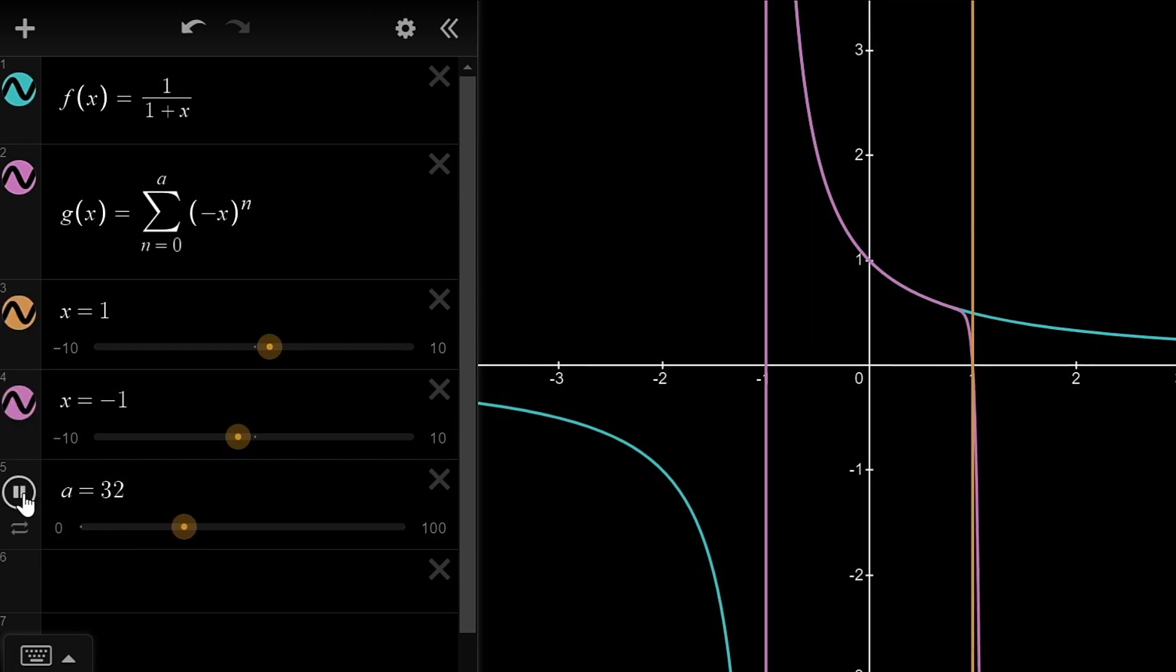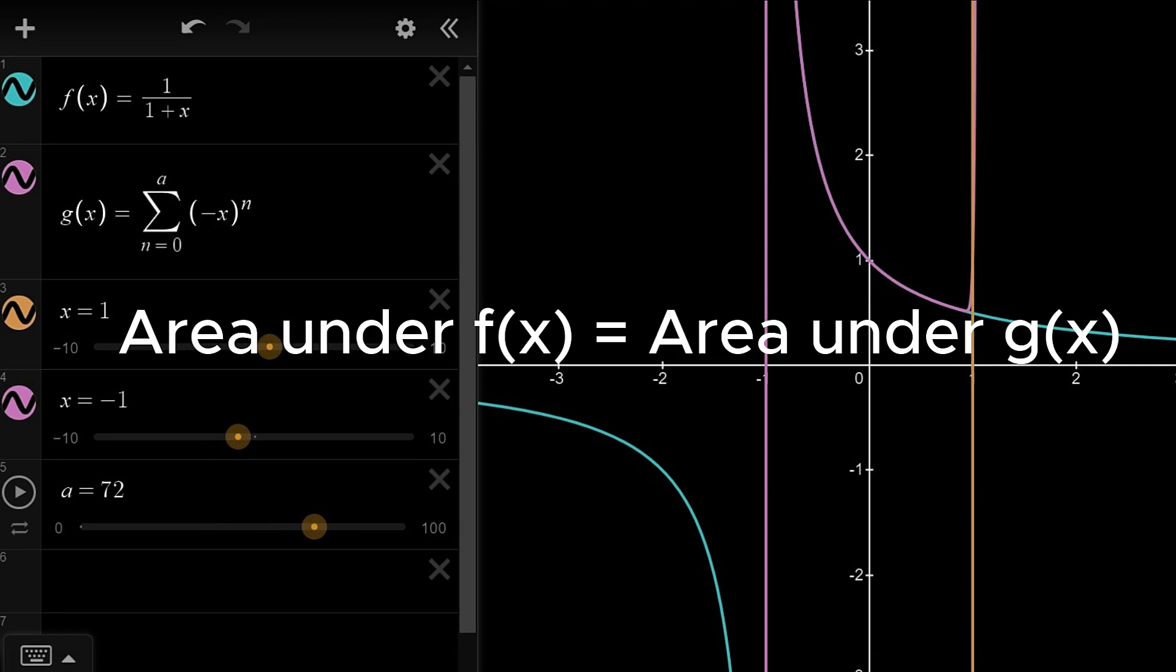If you go beyond minus 1 or 1, the approximation fails. If both graphs are identical between minus 1 and 1, the area under the curve on any interval inside the range also should be the same, right?